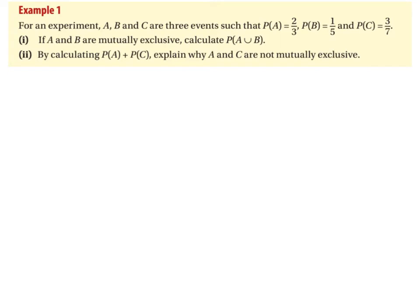Let's get on to some examples. We have three events: probability of A is two thirds, B is one fifth, and the probability of C is three sevenths. If A and B are mutually exclusive, calculate the probability of A union B. Since we know they are mutually exclusive, we can use P(A∪B) = P(A) + P(B). So that's two thirds plus one fifth, which equals 13 over 15.